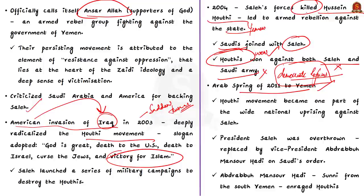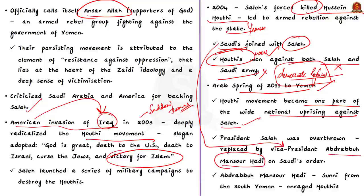When Arab Spring came to Yemen, the Houthi movement became one part of a nationwide uprising against President Saleh, eventually leading to his overthrow. But even then, Houthis did not stop rebelling because, based on Saudi Arabia's instructions, Saleh was replaced by his vice president Abdurabhu Mansour Hadi, who is a Sunni from South Yemen. Since the new leader was Sunni and supported by Sunni-based Saudi Arabia, this enraged Houthis even more.